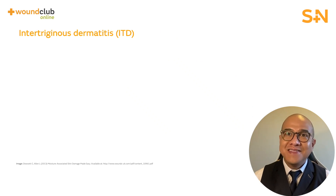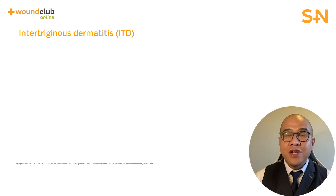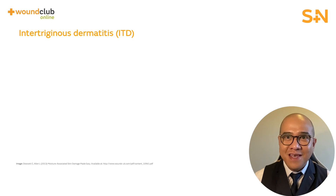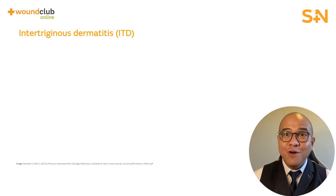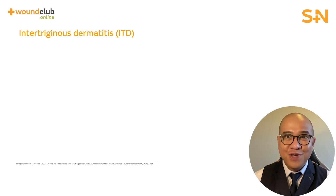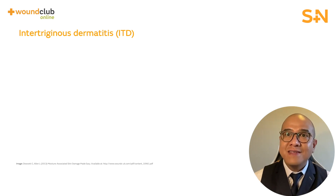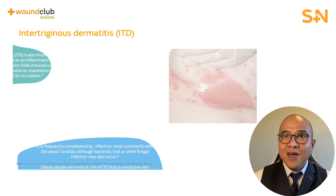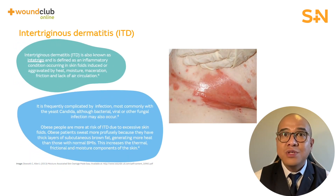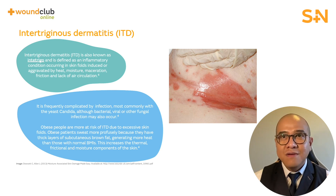The second type of MASD is Intertriginous Dermatitis, also known as Intertrigo, which I will be using for the duration of the presentation. Intertrigo is defined as an inflammatory condition occurring in skin folds, induced or aggravated by heat, moisture, maceration, friction, and lack of air circulation.